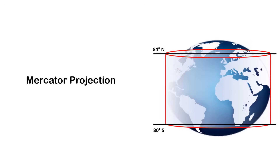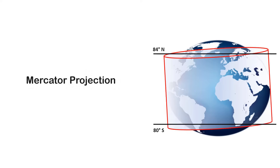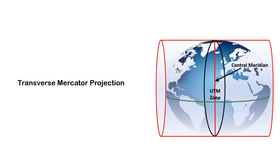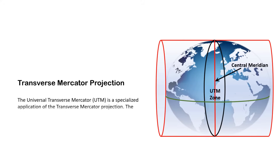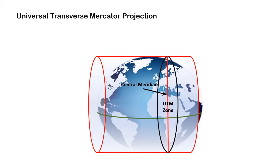UTM stands for Universal Transverse Mercator. It is a geographic coordinate system used to identify locations on Earth, much like latitude and longitude, but instead of degree minute second, it is depicted in meters.